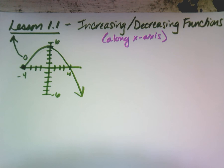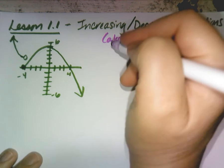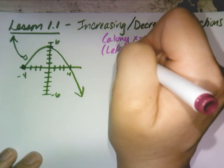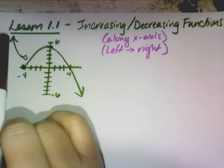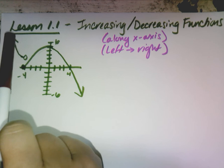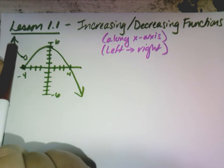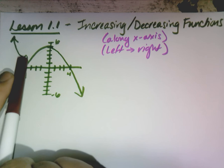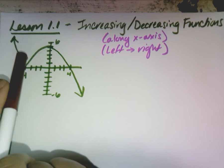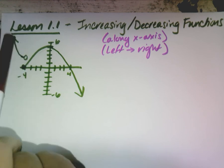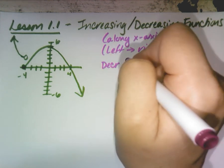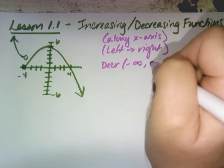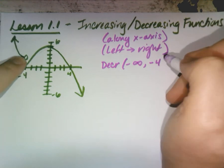We're going to do closed today. You always follow a graph from left to right, like you read a book. Coming from the leftmost part of the picture, my pen is going down until negative 4 on the x-axis. So I am decreasing from negative infinity all the way to negative 4, and you can keep it open since there was an open endpoint there.